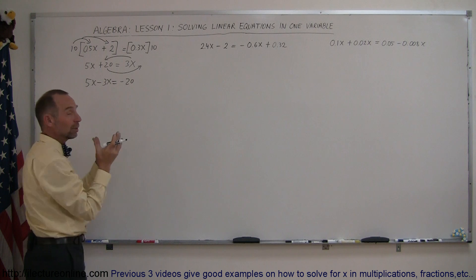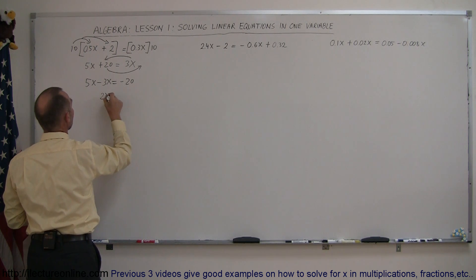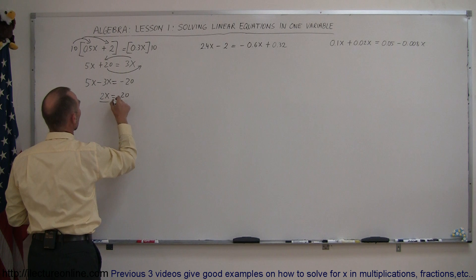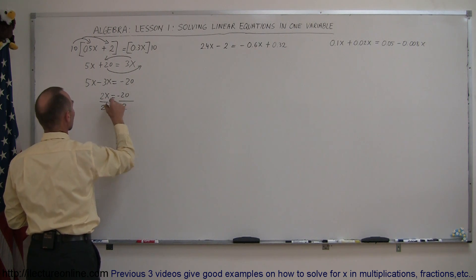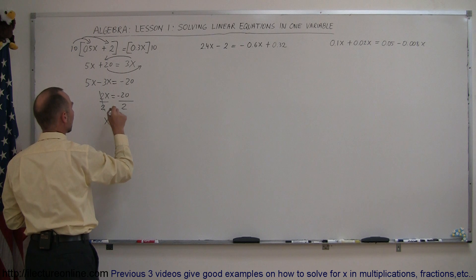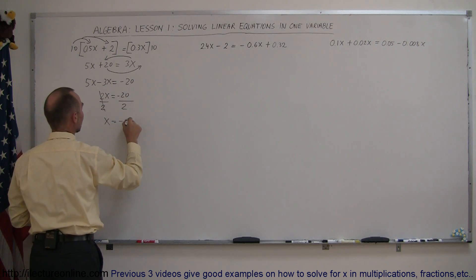5x minus 3x, we now combine the like terms, so this is 2x equals minus 20. Divide both sides by the numerical coefficient from the x, that disappears, and x equals minus 20 divided by 2 is minus 10.